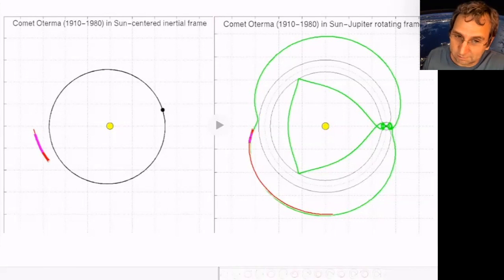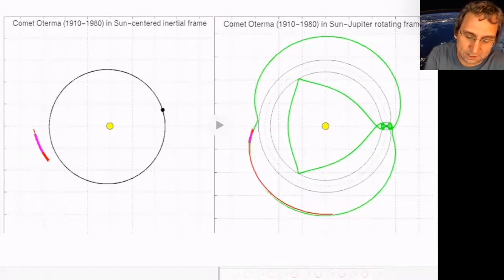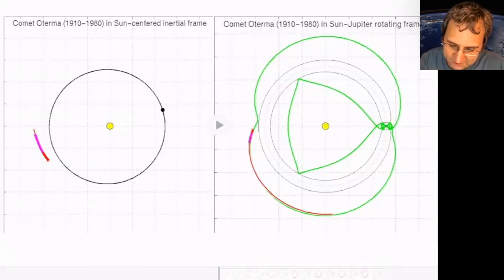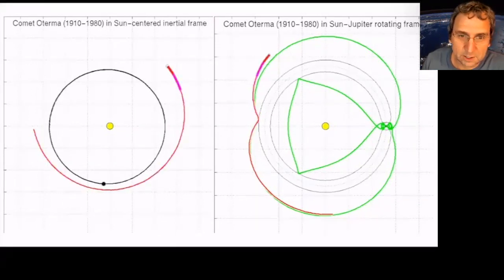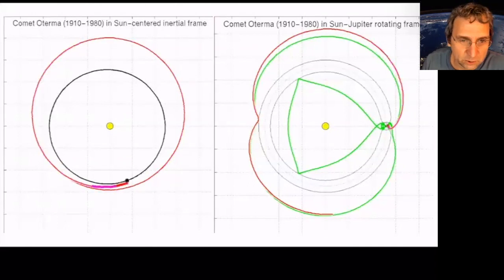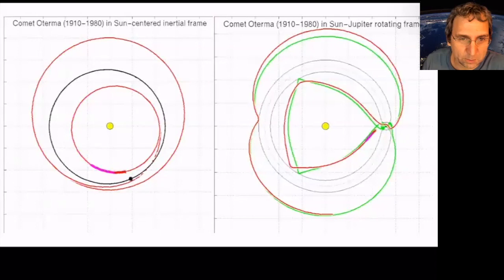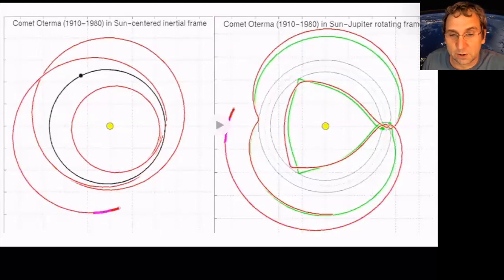So we've got the sun in the middle. And on the left, you'll see Jupiter going around in its orbit, the black dot. On the right, Jupiter is on the x-axis where all that business seems to be happening. And let me just play this. So on the left, the orbits look like usual Keplerian orbits. Then we had a pass by Jupiter. It's another Keplerian orbit inside. And then it goes back out. This was just over a 70-year period from 1910 to 1980.